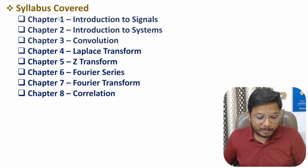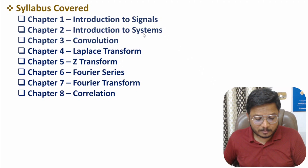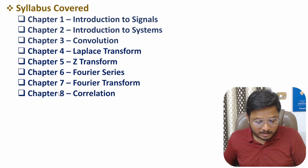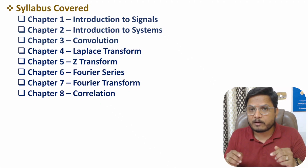In this course, I have prepared a total of 8 chapters. Chapter 1 is introduction to signals, Chapter 2 is introduction to systems, Chapter 3 is convolution of signals, Chapter 4 is Laplace transform, Chapter 5 is Z-transform, Chapter 6 is Fourier series, Chapter 7 is Fourier transform, and Chapter 8 is correlation of signals.